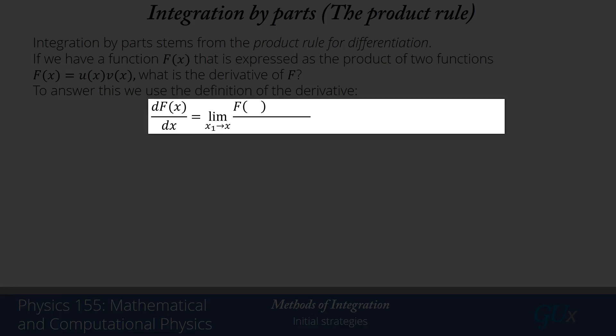So dF(x)/dx is the limit as x₁ approaches x of [F(x₁) - F(x)]/(x₁ - x), which now substituting in F in terms of the u's and the v's is the limit as x₁ approaches x, [u(x₁)v(x₁) - u(x)v(x)]/(x₁ - x).